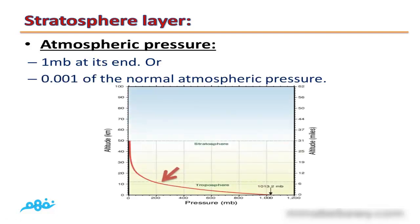Atmospheric pressure: By increasing the height, atmospheric pressure decreases until it reaches 1 millibar only at its end, at stratopause, which is equivalent to 0.001.